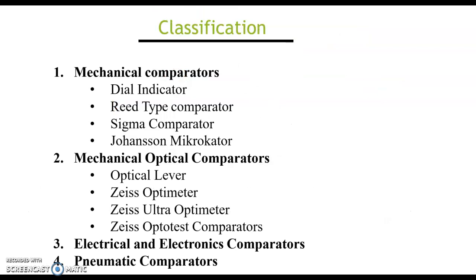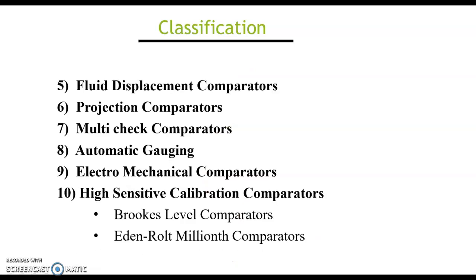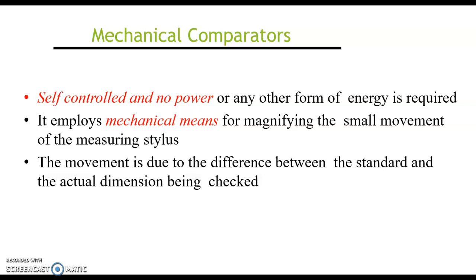In the classification of comparators, mechanical comparators are further divided into dial indicators, reed-type comparators, sigma comparators, and Johansson's micro comparators, depending on the working principle. Mechanical optical comparators are classified into optical lever, optical comparator, Sigma optimeter, ultra optimeter, and opto-test comparators. Electrical and electronic comparators, automatic comparators, fluid displacement comparators, projection comparators, multi-check comparators, automatic gauging, electro-mechanical comparators, and high-sensitivity calibration comparators are also available.